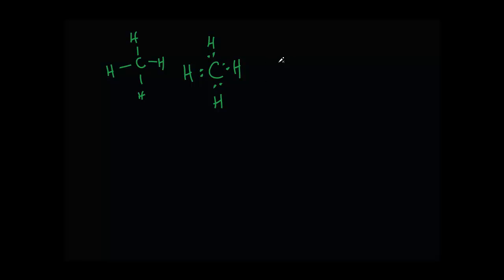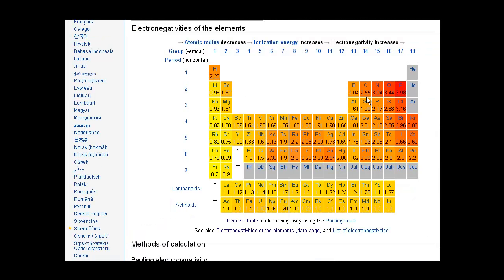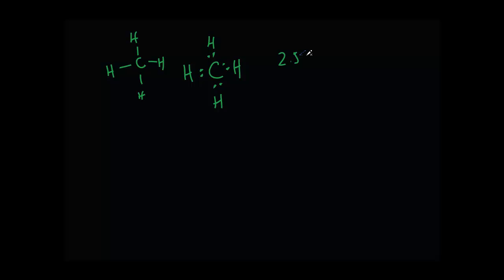Now the question is, is this ionic or covalent? Very simple. Look at an electronegativity table. Carbon's electronegativity is 2.55, hydrogen's is 2.20. 2.55 minus 2.20 gives you 0.35. Now remember, the cutoff point was 1.9. Anything greater is ionic. This is much less, so these are obviously covalent bonds.